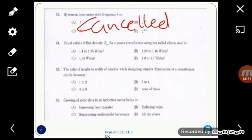Then 34th one: the usual values of flux density B for a power transformer using hot rolled silicon steel is? Option B, that is 1.25 to 1.45 weber per meter square.